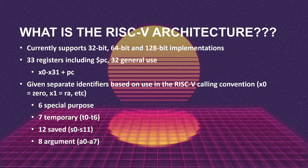Going into RISC-V a little deeper, what is the architecture? The RISC-V spec currently supports a 32-bit, a 64-bit, and a 128-bit implementation. In this video, we'll talk about the 64-bit implementation, but it should transfer pretty cleanly to all three. It has 33 registers including the program counter, so 32 general use registers — x0 through x31 plus the PC.